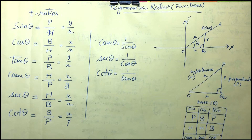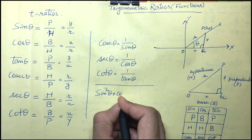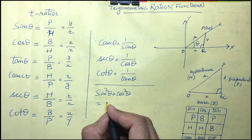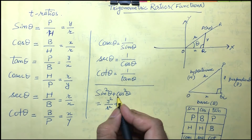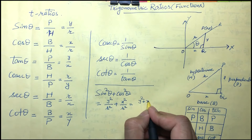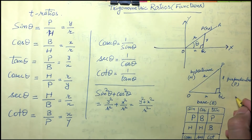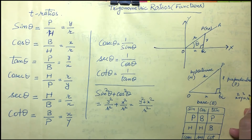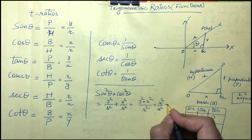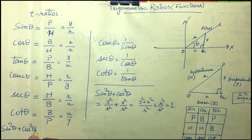With these formulas we can derive some identities. The first is sin squared theta plus cos squared theta. Substituting: sin theta is y upon r, cos theta is x upon r, so we get y squared plus x squared upon r squared. By Pythagoras theorem x squared plus y squared equals r squared, so this becomes r squared upon r squared, which equals 1.